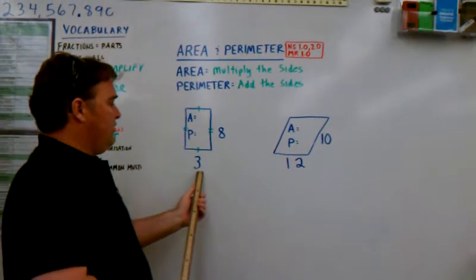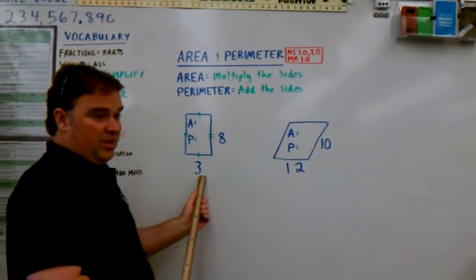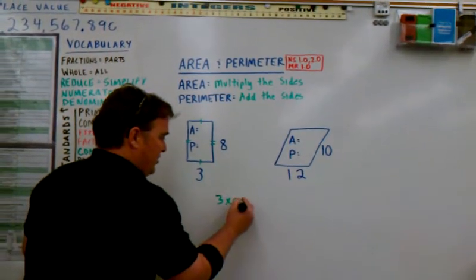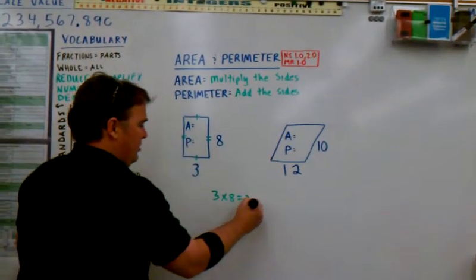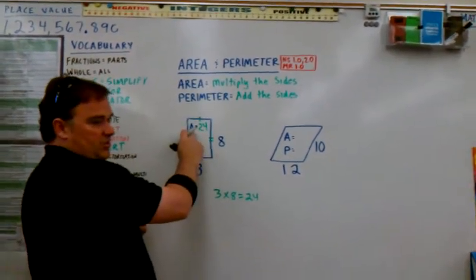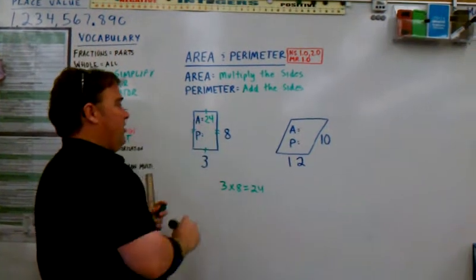Multiply the sides. We know that one side is three and the other side is eight. All we have to do to multiply the sides is that. Three times eight is twenty-four. So we can put the twenty-four right there. The A stands for area.